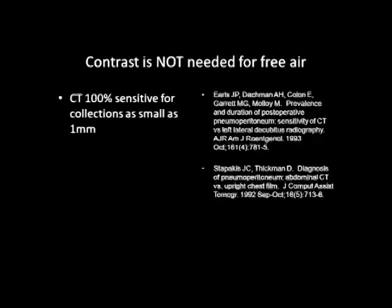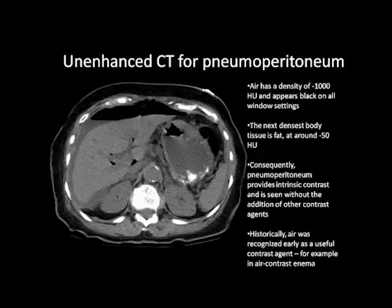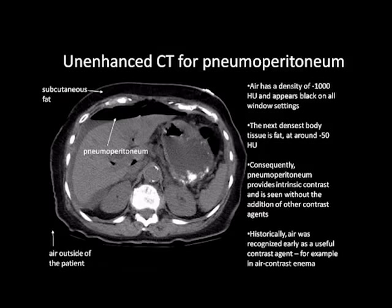CT is also 100% sensitive for free air, including collections as small as 1 millimeter. Air has a density of minus 1,000 Hounsfield units and appears black on all window settings. The next densest body tissue is fat at around minus 50 Hounsfield units. Consequently, pneumoperitoneum provides intrinsic contrast and is seen without the addition of other contrast agents. Historically, air was recognized early as a useful contrast agent, for example, in air contrast enema.